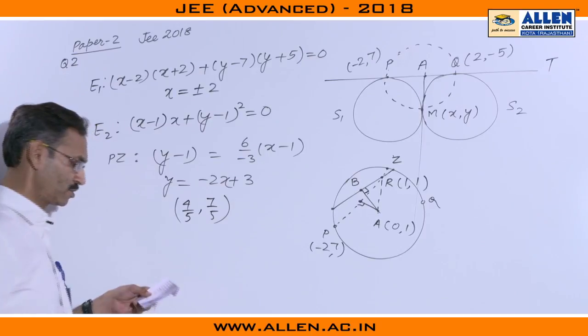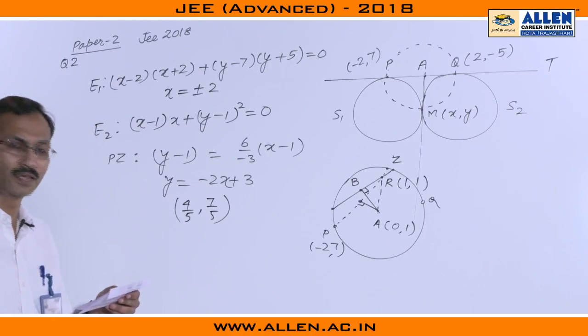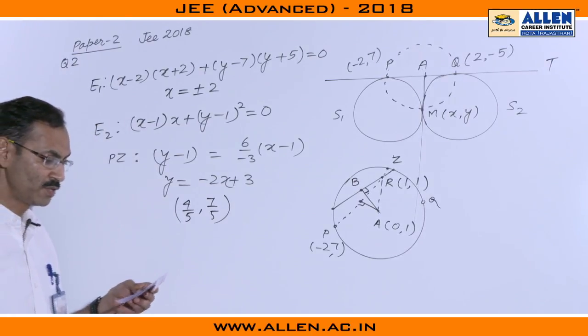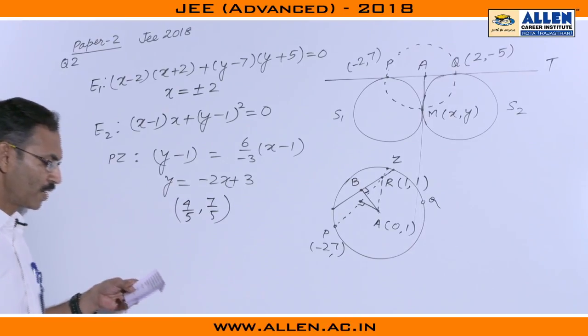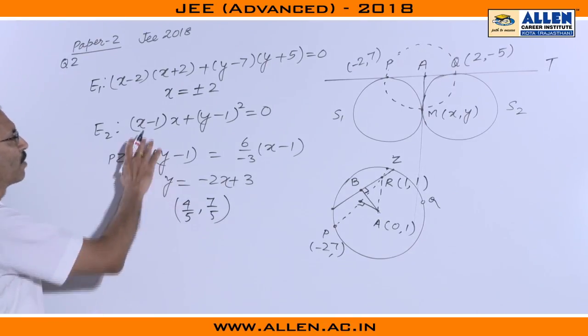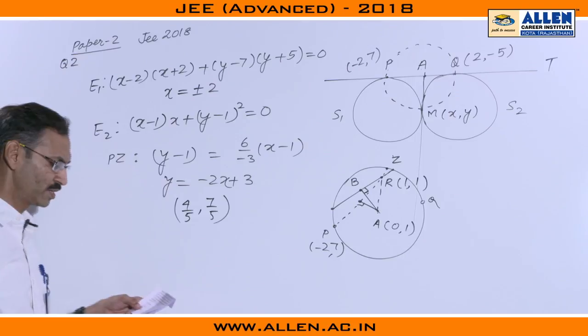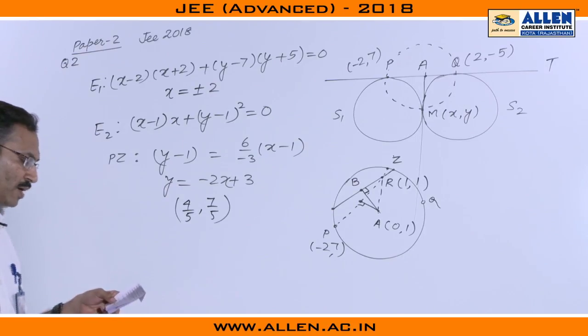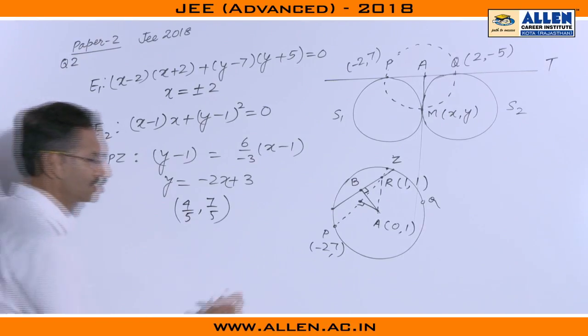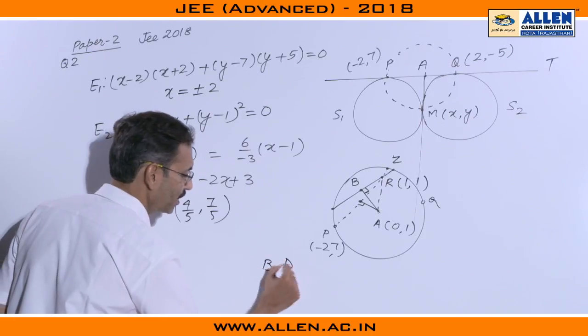We have to exclude this point that is why this option is right, the point does not lie on E2. And as far as C option is concerned half comma 1 lies on E2. Half comma 1 we can see just by observation is not lying on E2 that is why C option is incorrect. So the right answers are B and D.